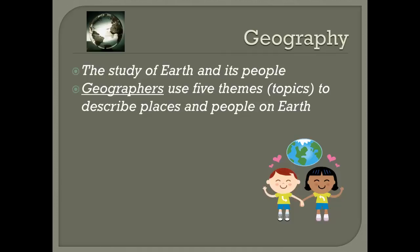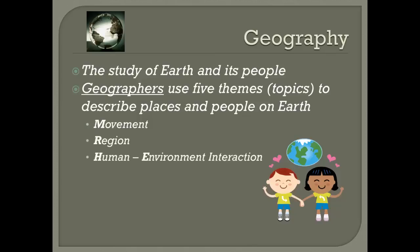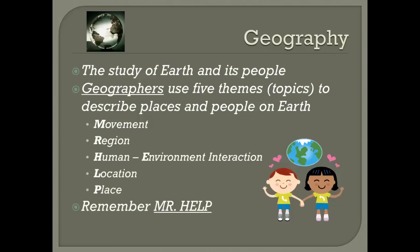These five themes include Movement, Region, Human Environment Interaction or HEI for short, Location, and Place. A good way to remember the five themes is the acronym MR. HELP, where each letter of MR. HELP is the start of one of the five themes.